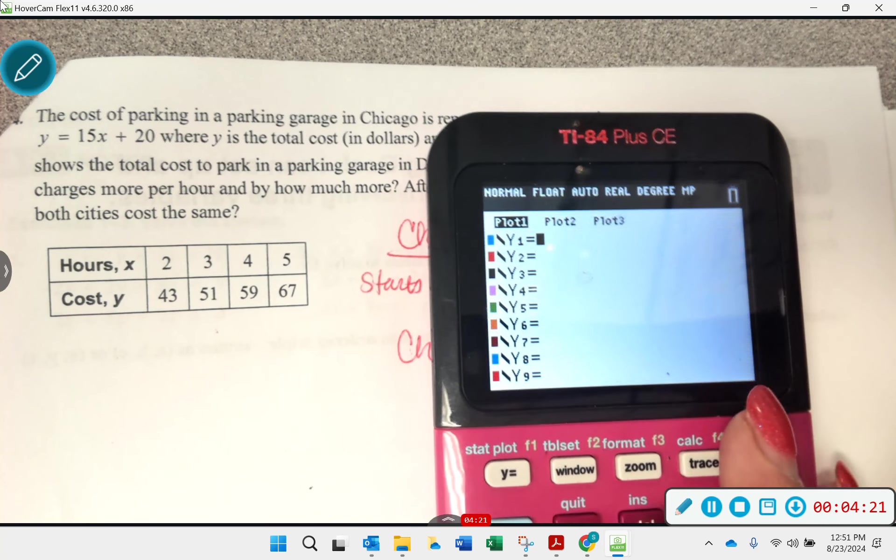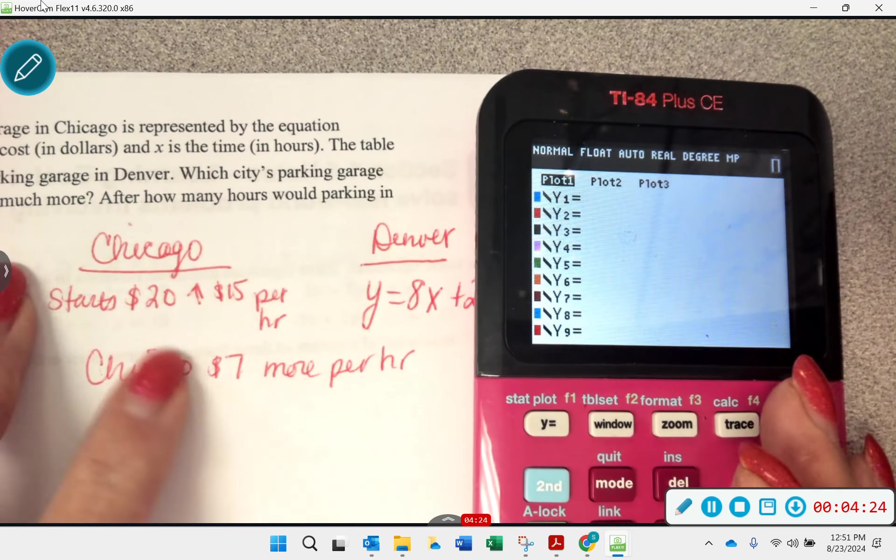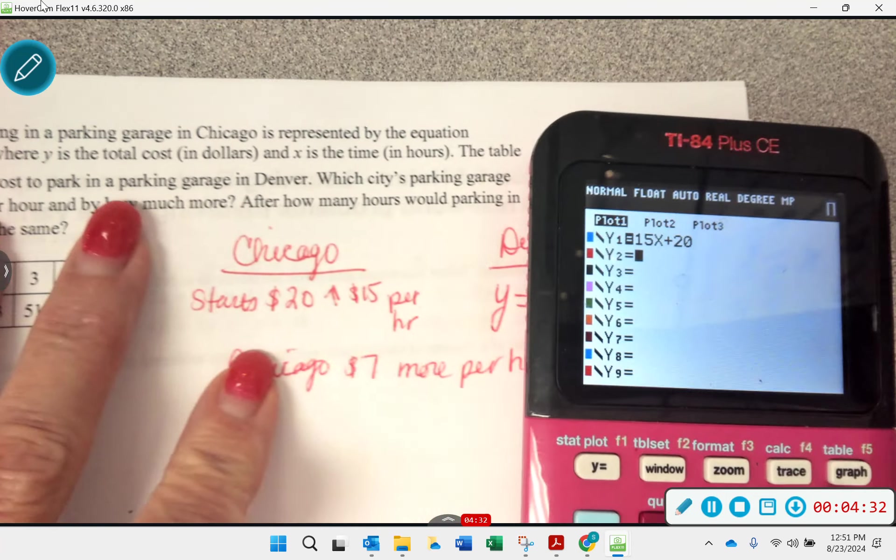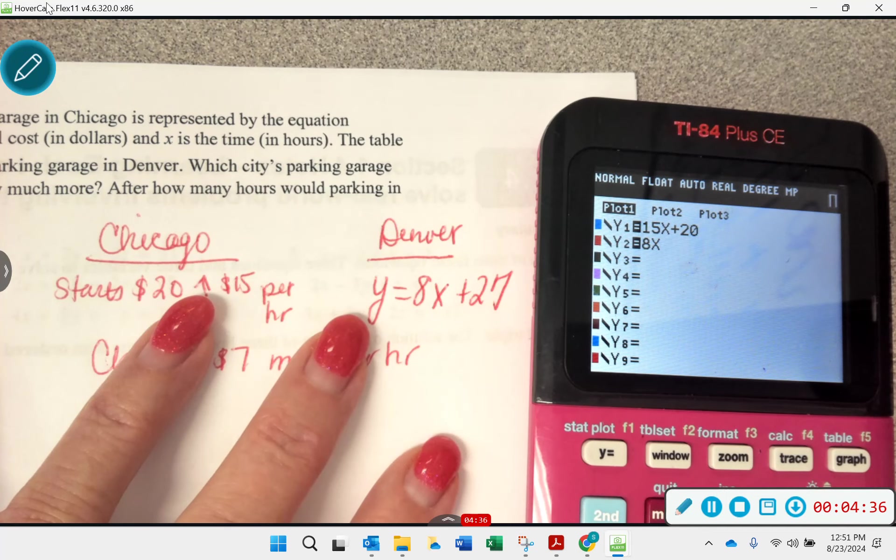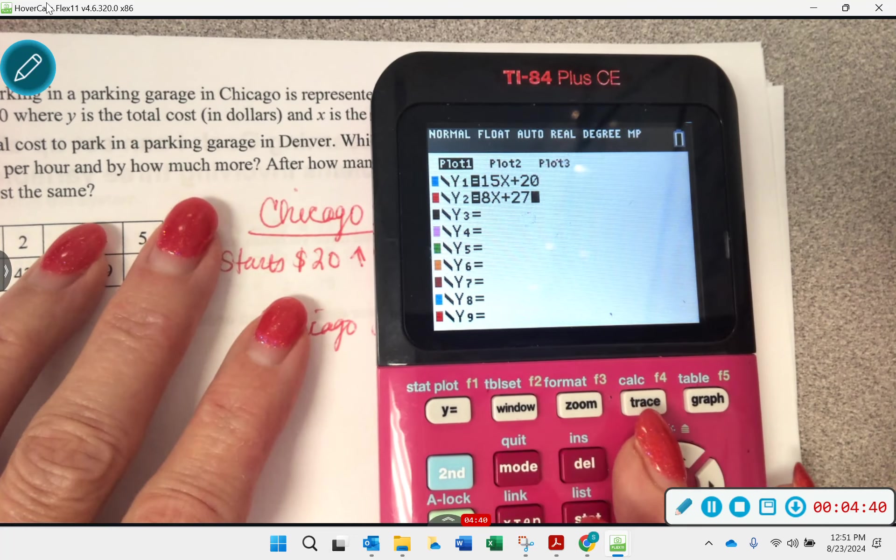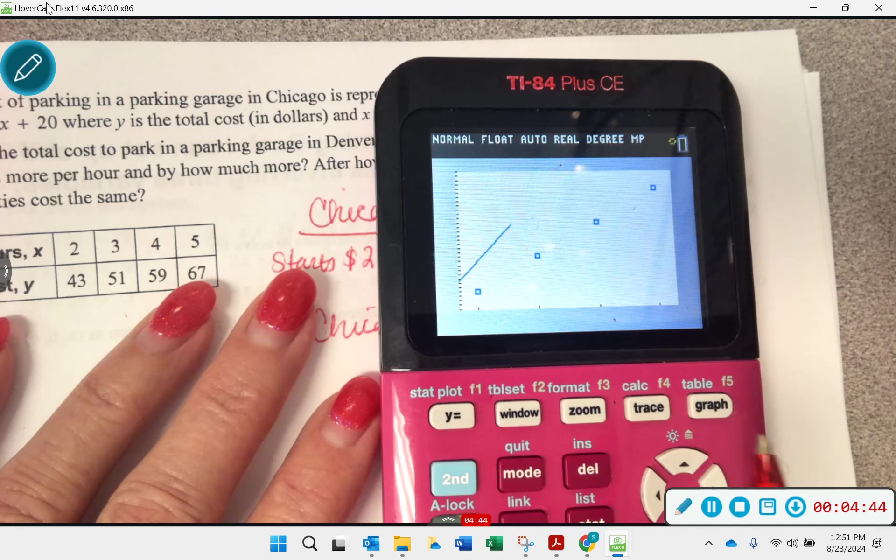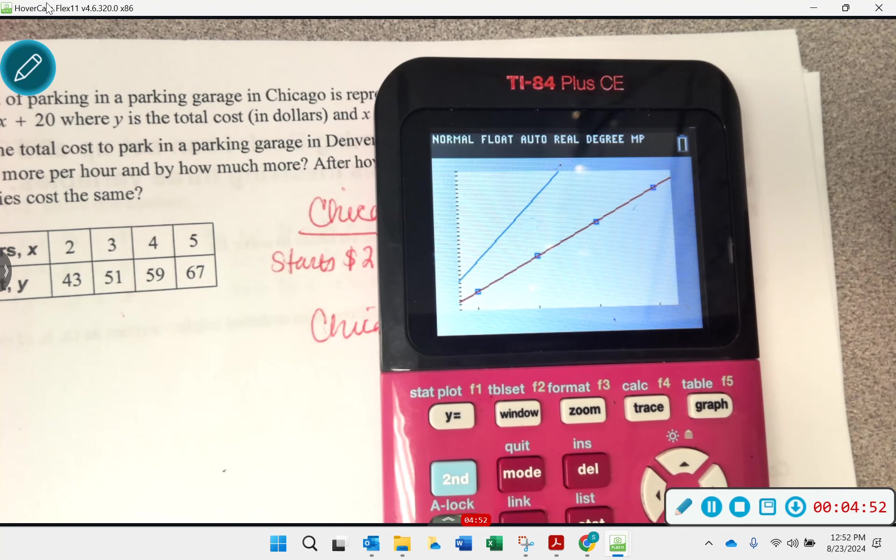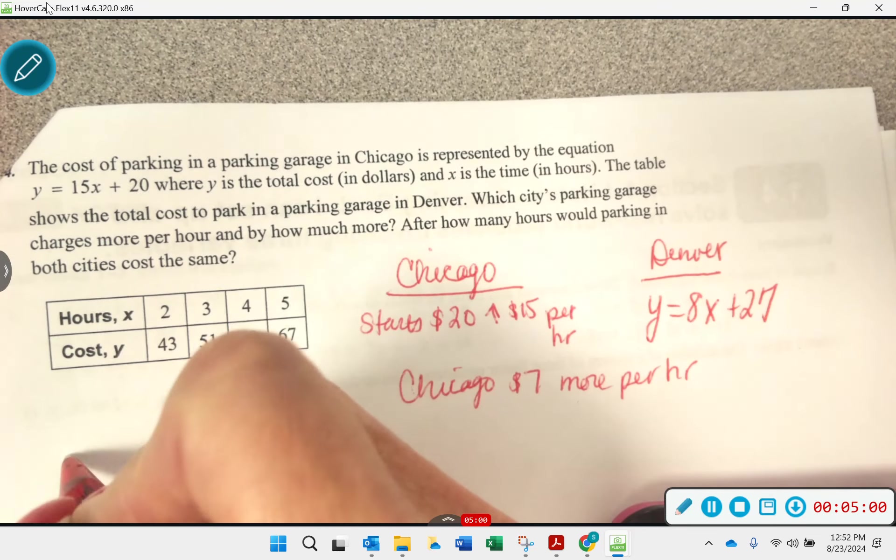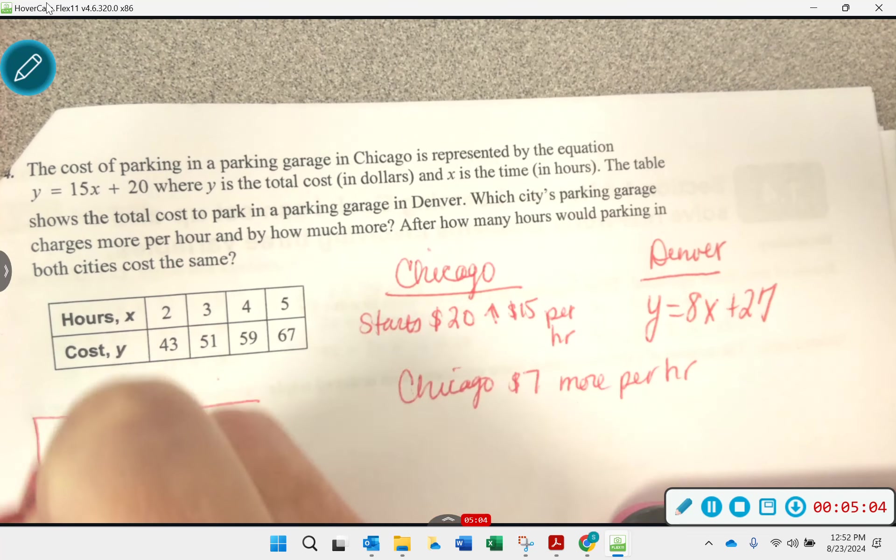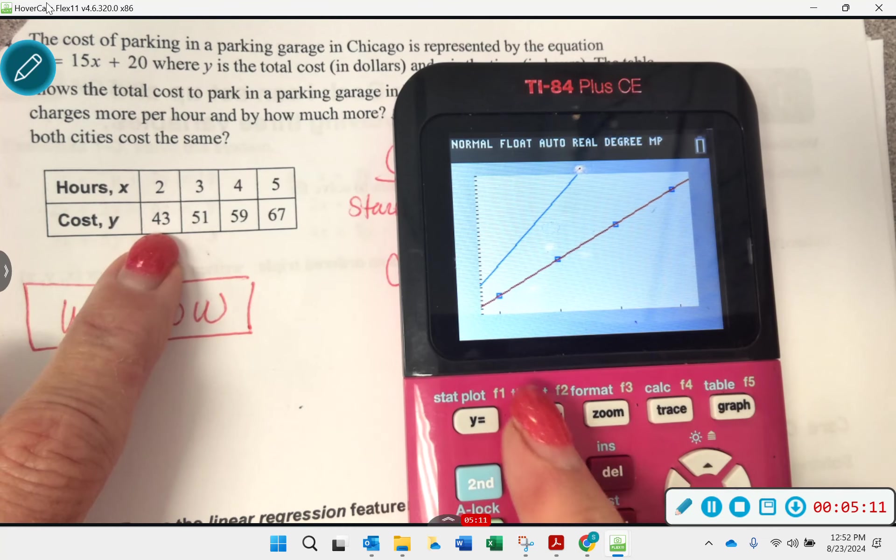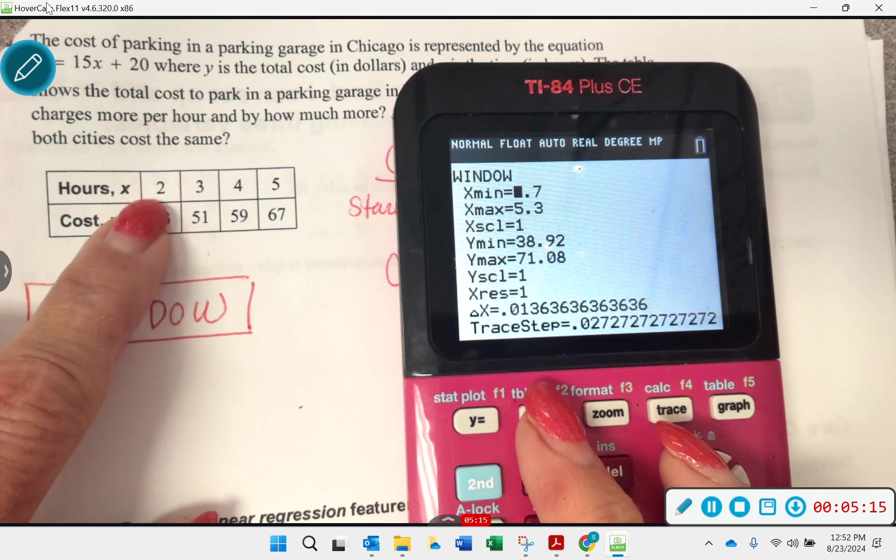We got that, after how many hours would parking in both cities cost the same? Well, I want to show you something here. Let's go to y equals. We're going to put both of these equations in. One equation for Chicago was 15x plus 20. The other one for Denver is 8x plus 27. And I'm going to go ahead and do a graph. I want to see these. There's one. There's the other. That's not a great representation, is it? I'd like to see more of this graph. Let me show you another thing you can do that we have not talked about. And I'd like you to jot this down, window.